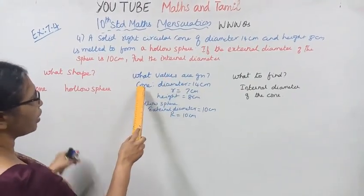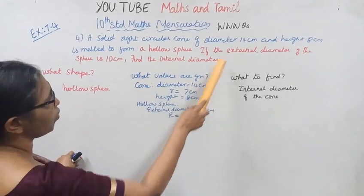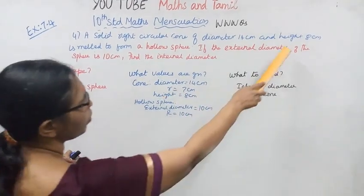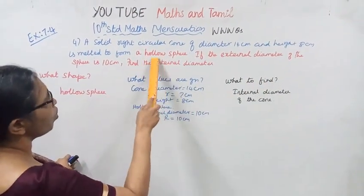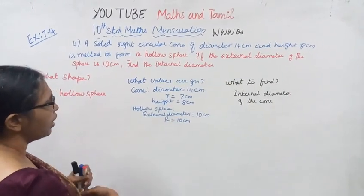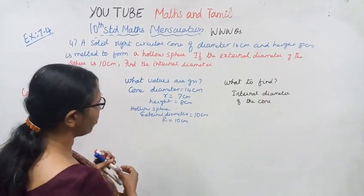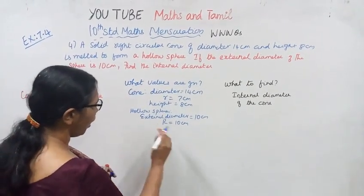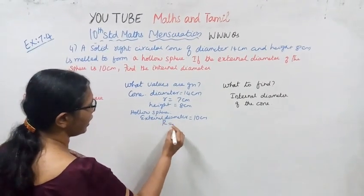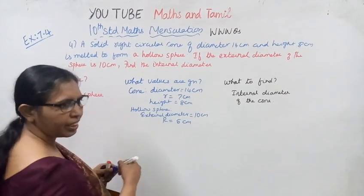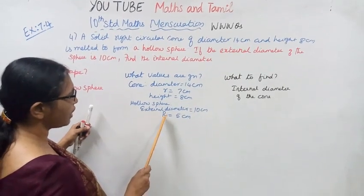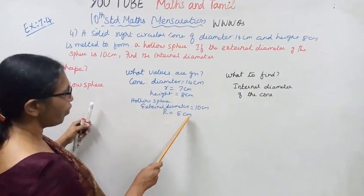What values are given? Cone diameter is 14 cm. Radius is 14 by 2 = 7 cm. Height is 8 cm. For the hollow sphere, external diameter is 10 cm, so external radius capital R is 5 cm.